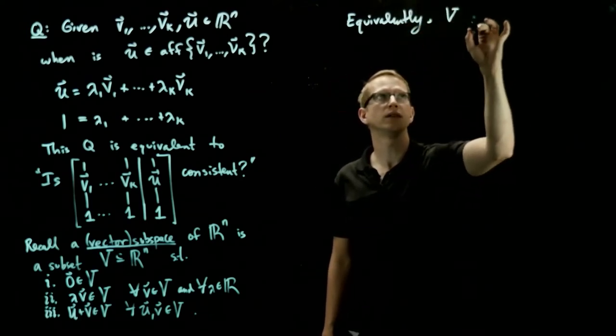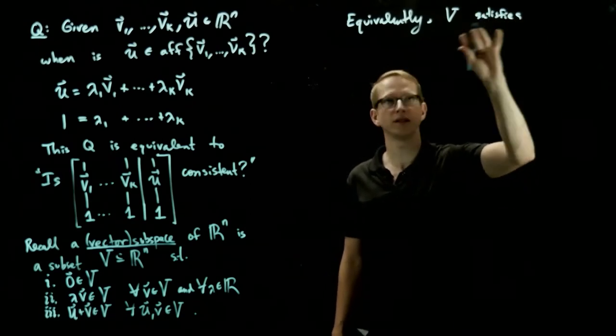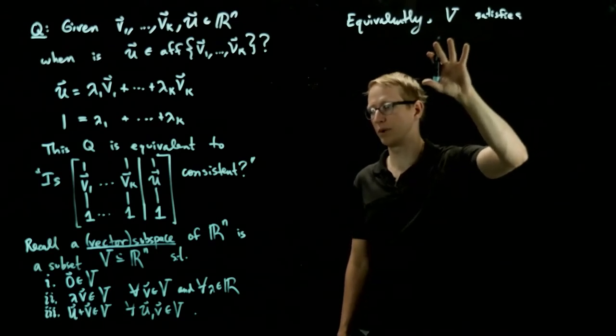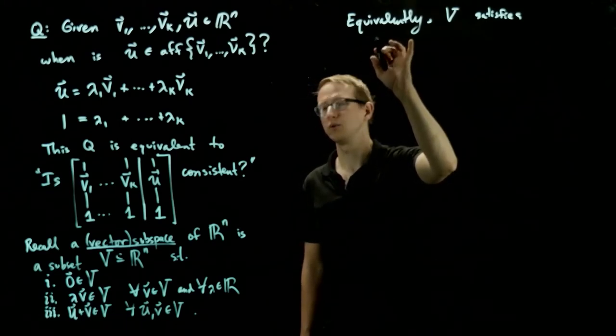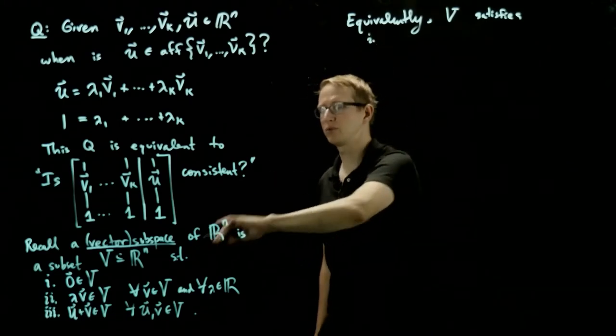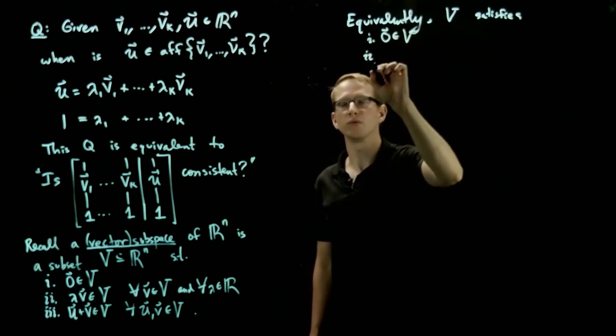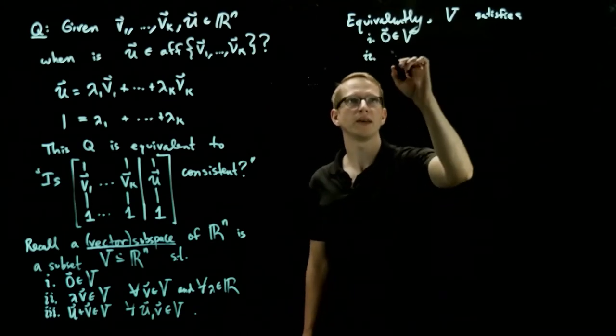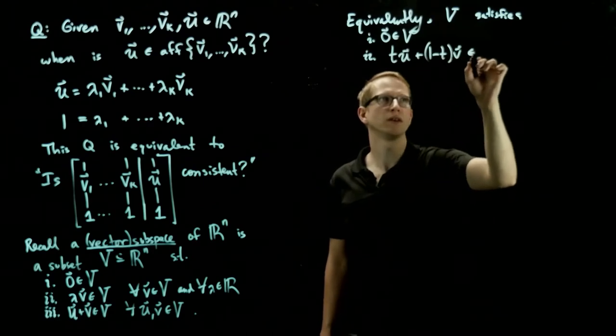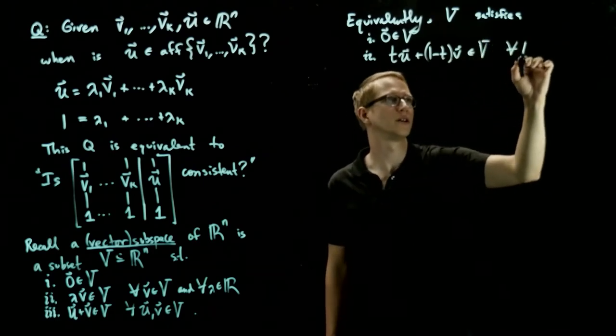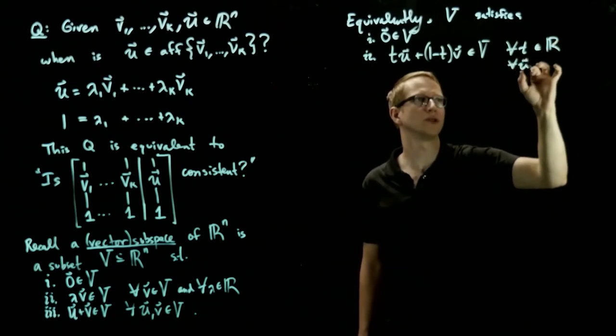So equivalently, V satisfies, which means that if V satisfies the following conditions I'm about to write, then it satisfies this one. And conversely, let's use i because the first one is the same. The zero vector is in V. And the second condition, which is sort of a combination of these two, is that t*u plus (1-t)*v is in V for all t in real numbers and for all u and v in V.